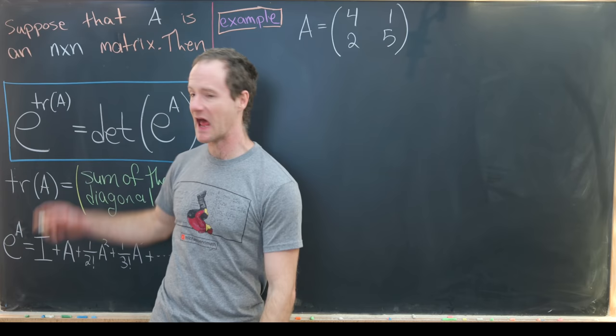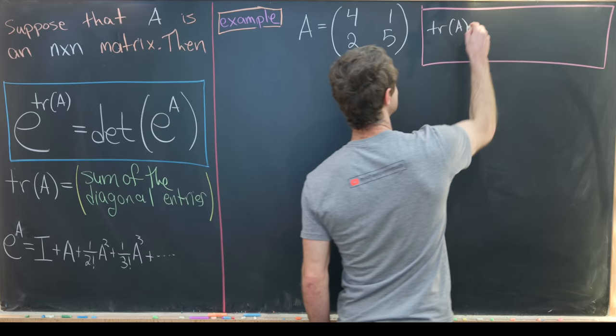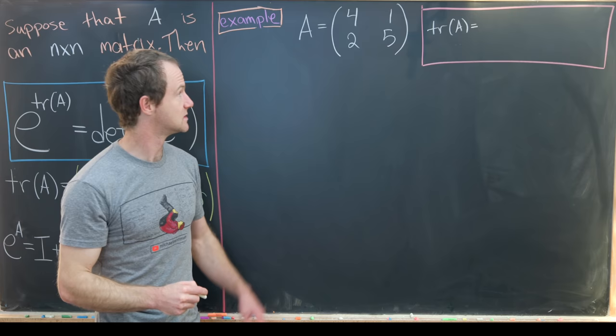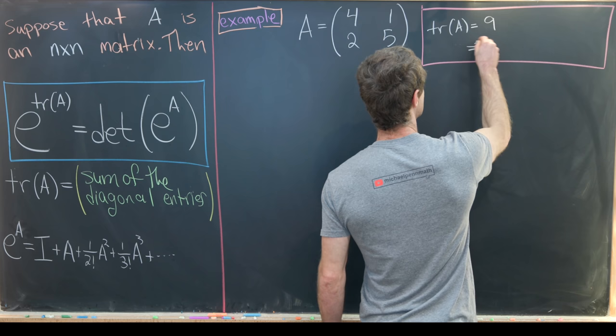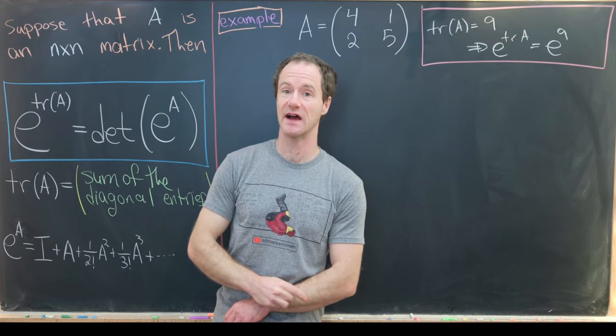Let's exponentiate the trace first because that's quite simple. The trace of A is just the sum of the diagonal entries, so that's 4 plus 5, giving trace equal to 9. So the exponential of the trace is e to the 9. Good — that was fairly simple; we calculated the left-hand side of this boxed equation.